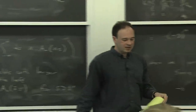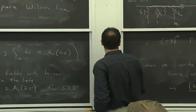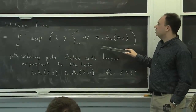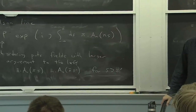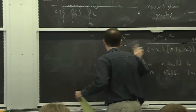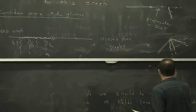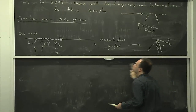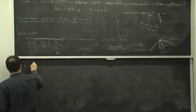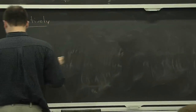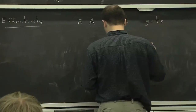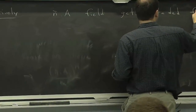One way of thinking about what's happened in this effective theory — and this turns out to be generically true — is that rather than having this n-bar dot A field, which was order one, it can actually be traded for this Wilson line object. I just showed you that this happened for this particular example, but it turns out to be generic. Instead of talking about the n-bar dot A field, we can talk about this function of the field, which is this Wilson line.